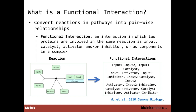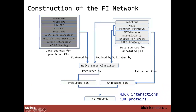The starting point is breaking down pathway reactions into binary interactions across a variety of data sources to create annotated functional interactions — annotated FIs. You then train a Naive Bayes classifier to examine features of other protein-protein interaction databases to identify predicted FIs. Combining that information creates the functional interaction network, which currently consists of 436,000 interactions and 13,000 proteins, rebuilt every year.